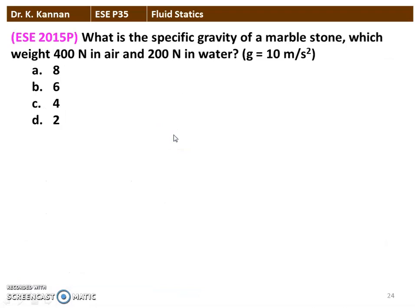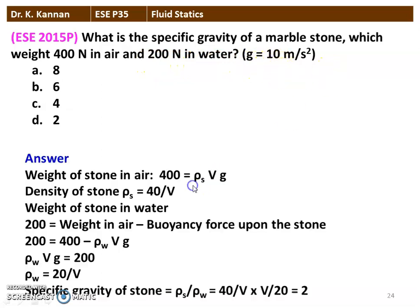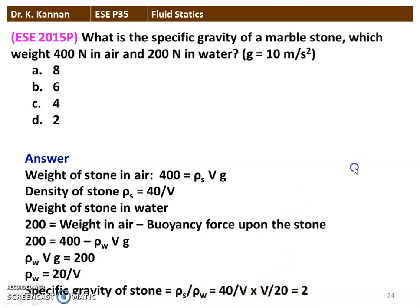The next question from the 2015 question paper. What is the specific gravity of a marble stone which weighs 400 N in air and 200 N in water? Take g = 10 m/s². Weight in air: 400 = ρ_s × V × g, so ρ_s = 40/V. Weight in water: 200 = 400 − ρ_w × V × g, so ρ_w × V × g = 200, giving ρ_w = 20/V. Specific gravity = ρ_s/ρ_w = (40/V) / (20/V) = 2. The answer is 2.